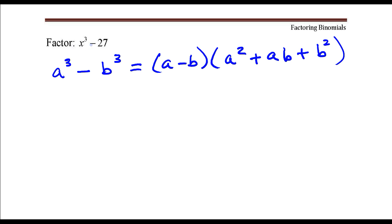If you look at the first term of this binomial, x³, that's the perfect cube of x. The last term, 27, that's the perfect cube of 3. And the reason I wrote it this way is so that you can easily identify what a and b are.